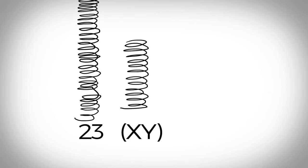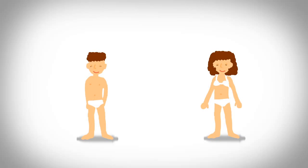The 23rd pair, the sex chromosomes, differ between males and females. Females have two copies of the X chromosome, while males have one X and one Y chromosome.